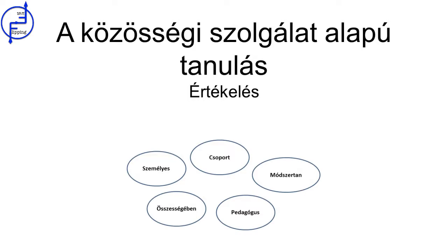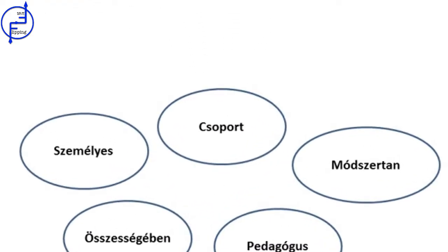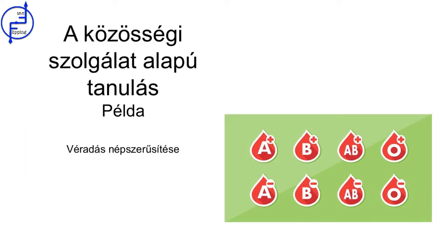The last phase is dedicated to an evaluation of the results obtained. These results are evaluated both individually and as a group. It's also necessary to assess the relationship between those involved in the collaboration. The teacher must also evaluate the effectiveness this methodology has achieved against the academic objectives as well as their role in the whole process.